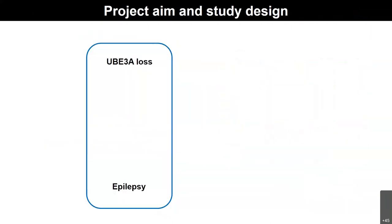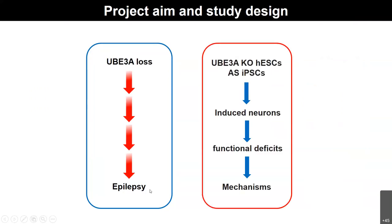Here is the study design. We want to understand how UBE3A loss of function will eventually lead to epilepsy in patients. We use CRISPR to knock out UBE3A in embryonic stem cells — we used H9, a well-known ES line — and we also had some Angelman patient-derived iPSCs obtained commercially. We then made them into induced neurons and studied the functional deficits, hoping to gain mechanistic understanding about the disease and how seizures will be ensued.